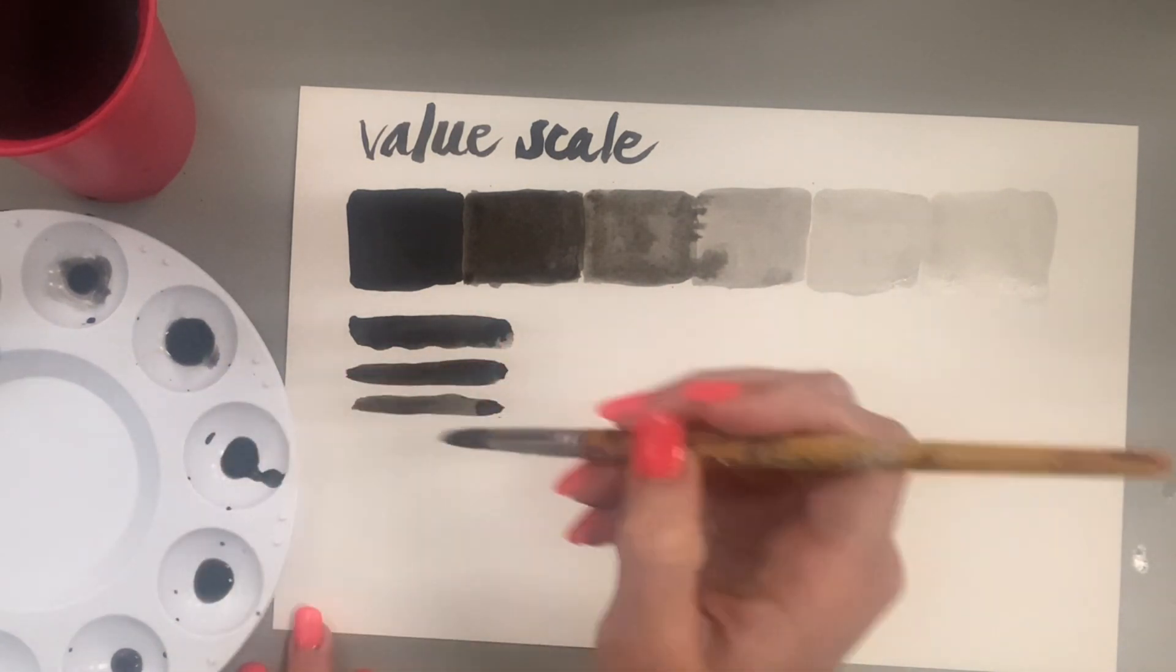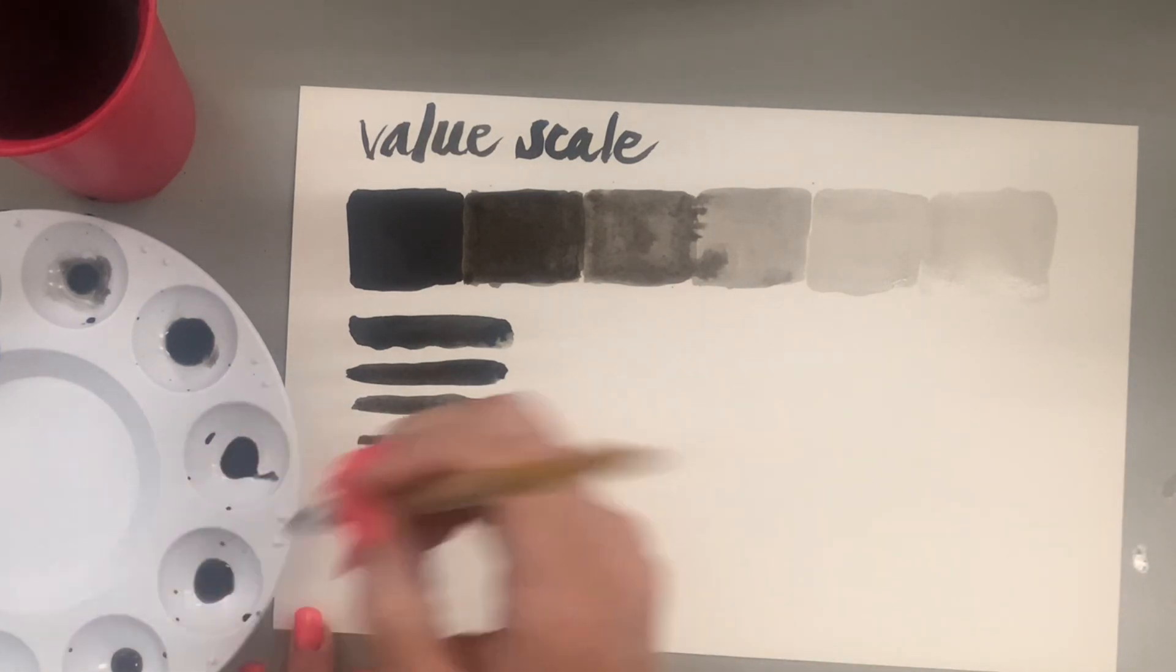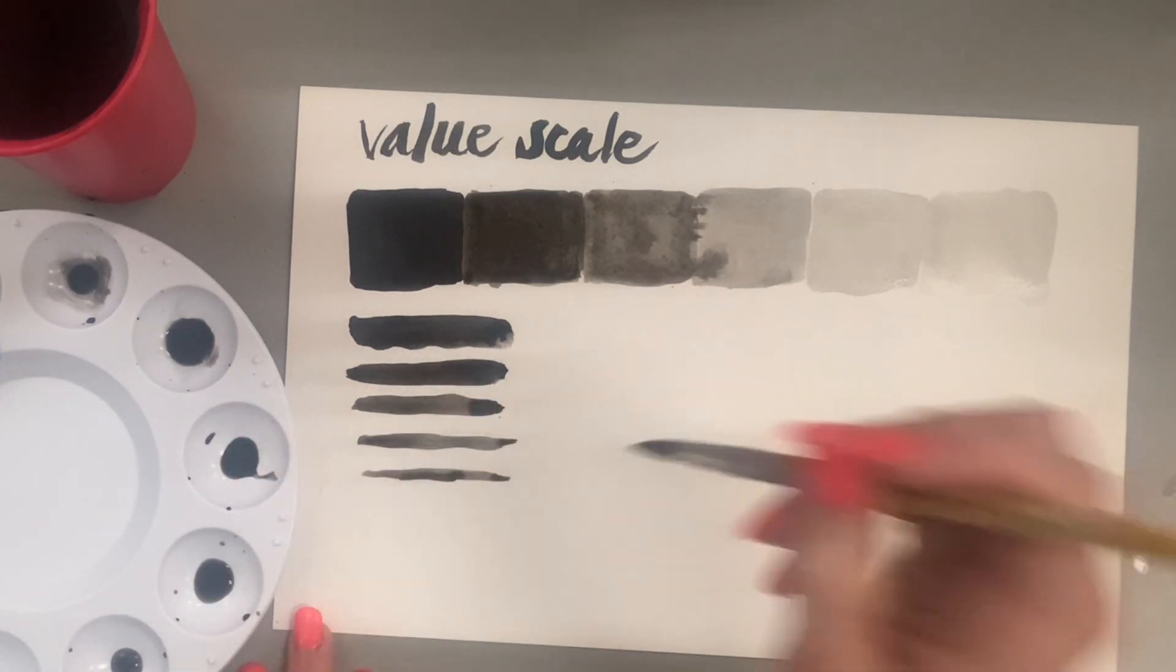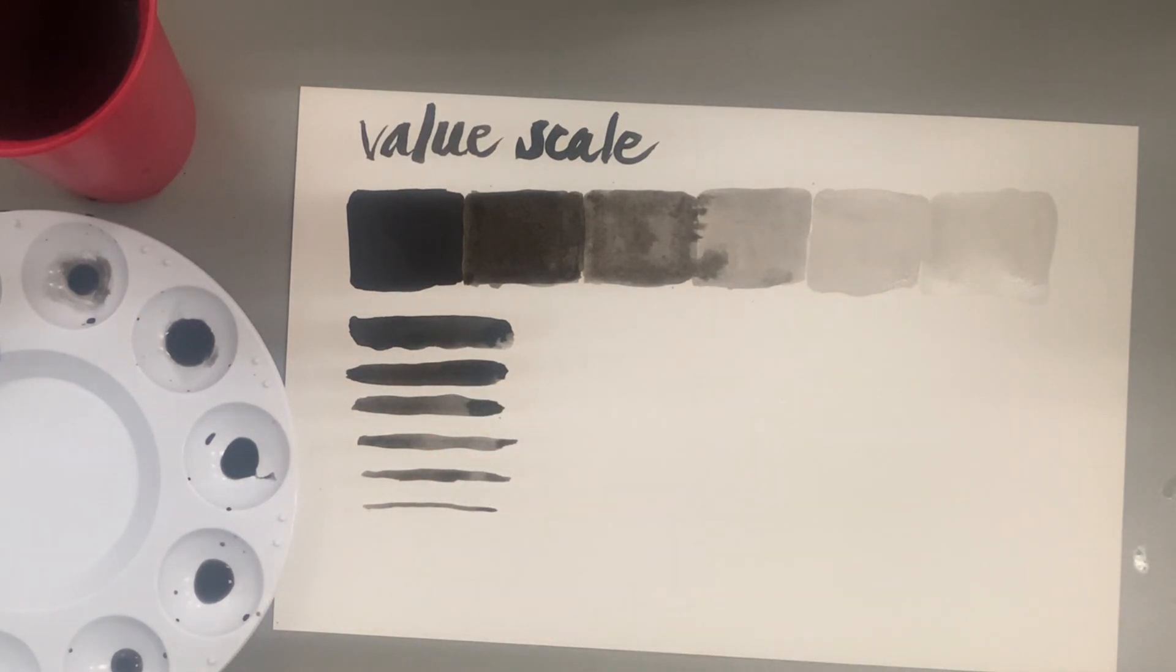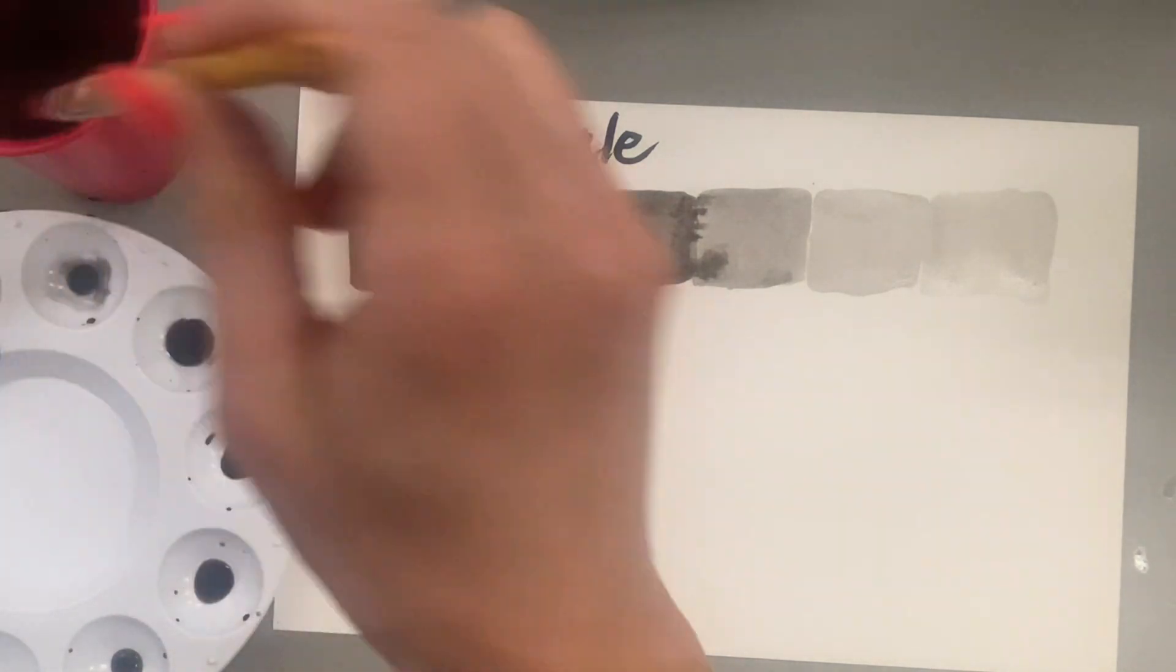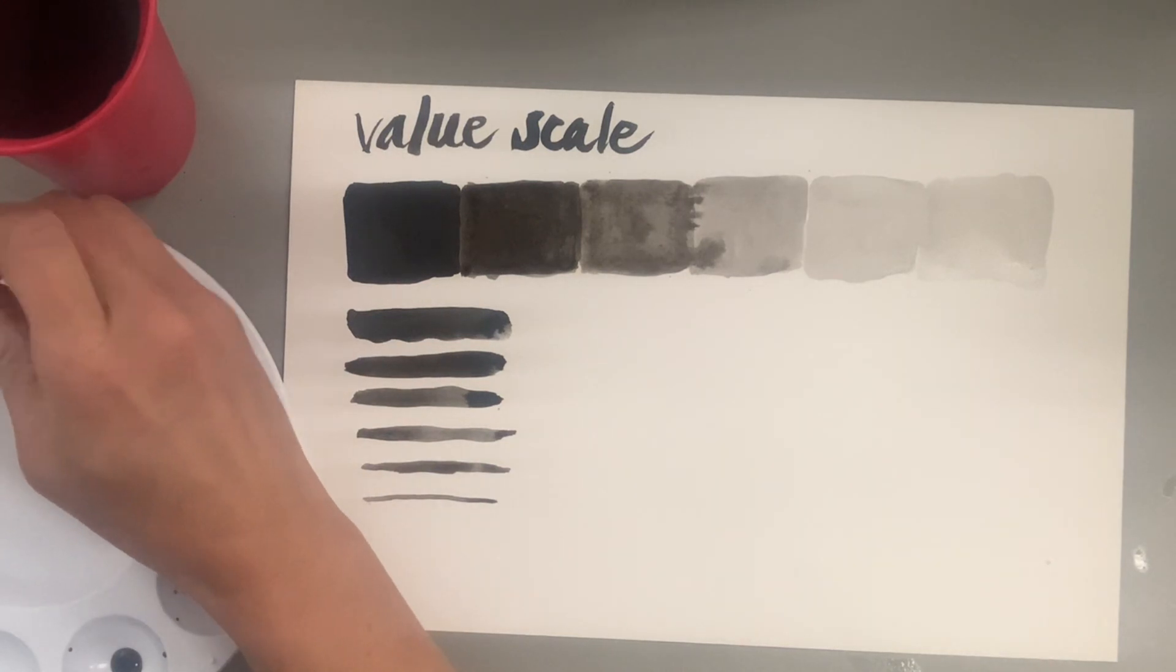You could play around with different types of brushes - sumi ink brushes are really thick, you could get really fine point, you could even try a flat brush if you want to see what that would look like with your ink. So you can see with one brush there's quite a lot of line variety that can be created.